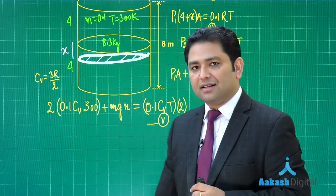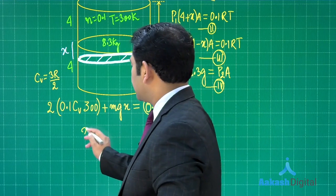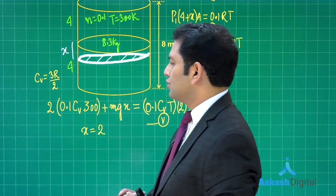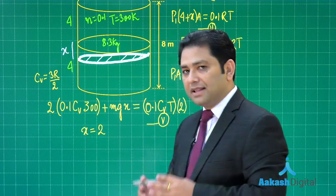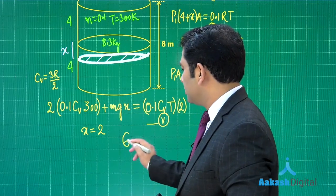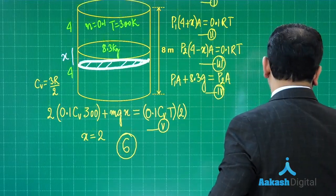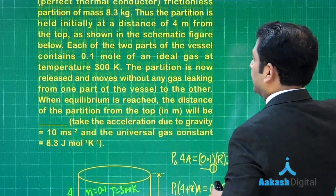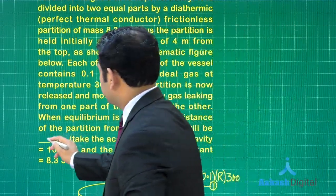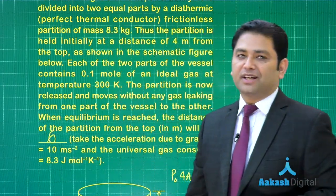Solving these equations, x comes out to be approximately 2. The distance of the partition from the top is 4 + 2 = 6 meters. So 6 is the correct answer.